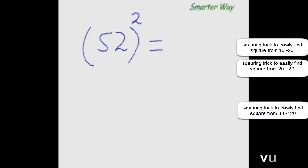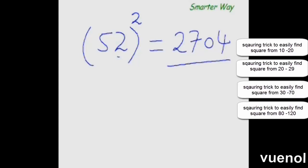Ok so now let me do it the smarter way. So 25 plus 2 is 27 and square of 2 is 4 so 04 this is my answer. Could you understand that? Let me just explain it to you in more detailed manner.